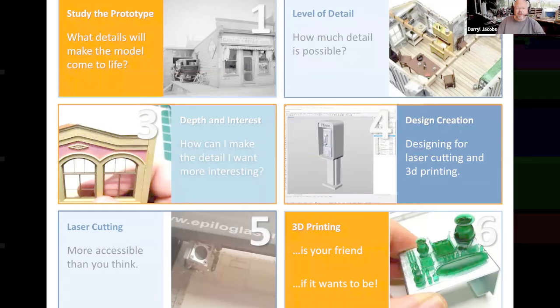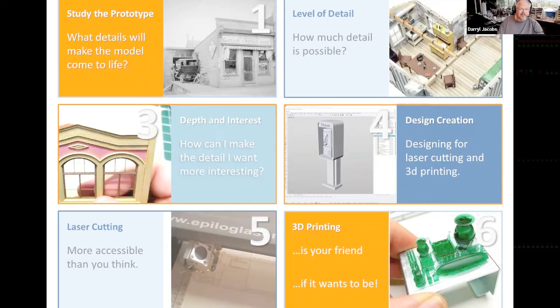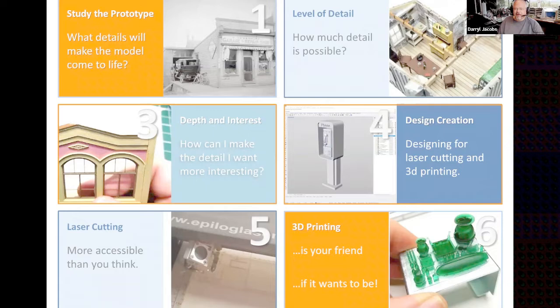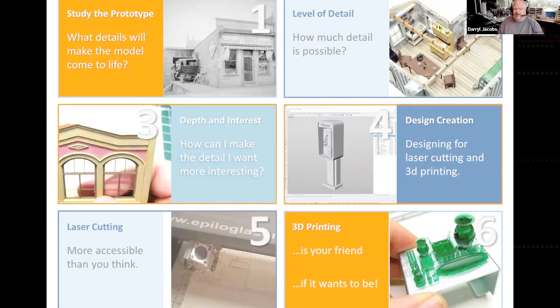This morning we're going to talk about detailing across a few different points. First, studying the prototype — what are you trying to achieve in scale, and what details should you do to make the model a representation of the full-size prototype? Then the level of detail — how much detail is possible today with laser cutting and 3D printing. Third, depth of interest — how can you make the detail actually more interesting and appealing to the viewer? We'll also touch on design creation, designing for laser cutting and 3D printing, and a quick overview on how the modeler can access laser cutting and 3D printing.